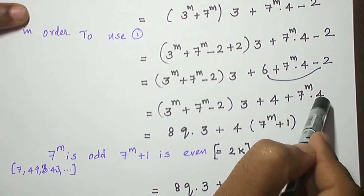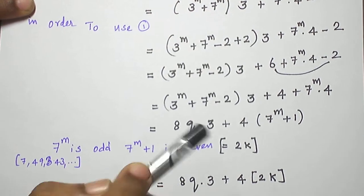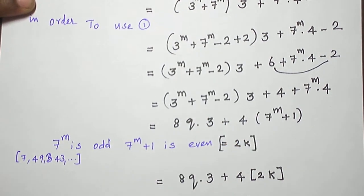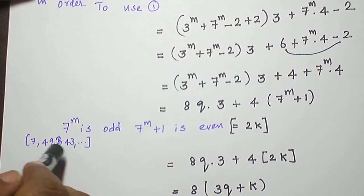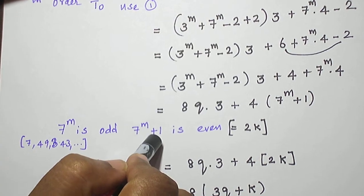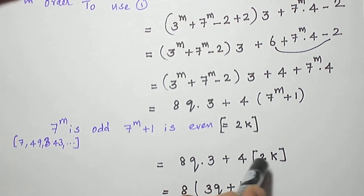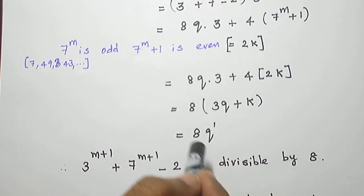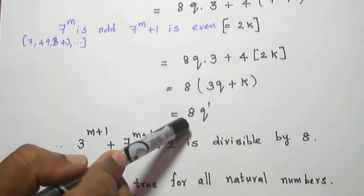Now 4 is common in those 2 terms, so I take it in common and we will get 7 power m plus 1. The first term is clearly divisible by 8. On first look, the second term is clearly divisible by 4, but we need it also divisible by 8. Since 7 power m is an odd number — 7, 49, 343 and so on, all odd — when we add 1 more, it becomes an even number, which I write as 2k. So that term becomes 8k, and 8 is common in both terms. Taking 8 in common gives 3q plus k, written as q dash. So 3 power m plus 1 plus 7 power m plus 1 minus 2 has a factor 8, and is therefore divisible by 8.